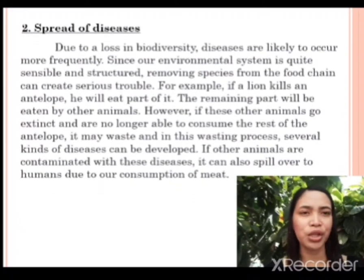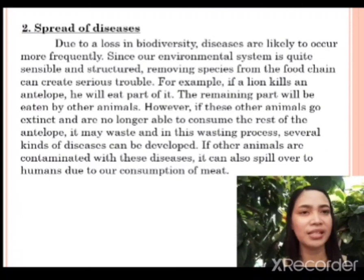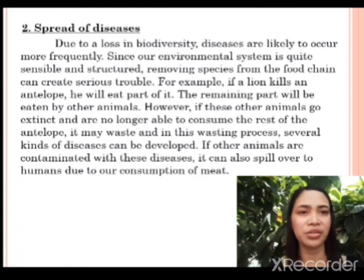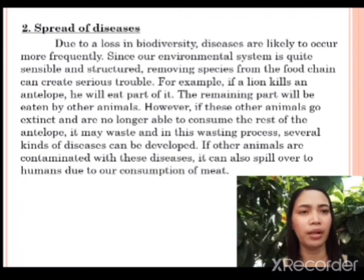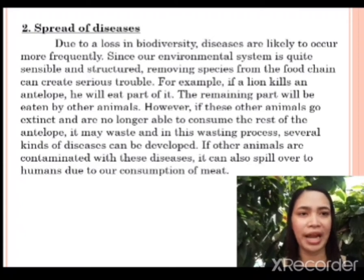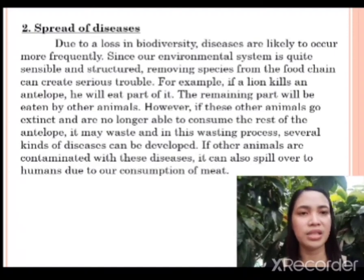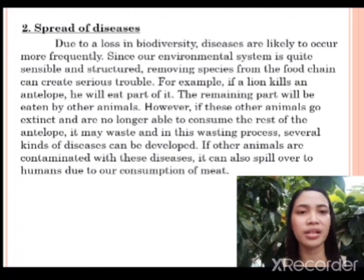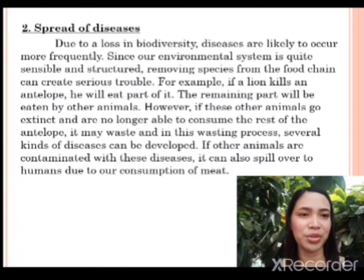Spread of diseases. Due to a loss in biodiversity, diseases are likely to occur more frequently. Since our environmental system is quite sensible and structured, removing species from the food chain can create serious trouble. For example, if a lion kills an antelope, he will eat part of it. The remaining part will be eaten by other animals. However, if these other animals go extinct and are no longer able to consume the rest of the antelope, it may waste, and in the wasting process, several kinds of diseases can be developed. If other animals are contaminated with these diseases, it can also spill over to humans due to our consumption of meat.